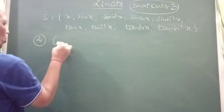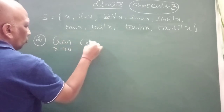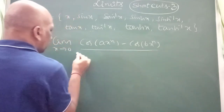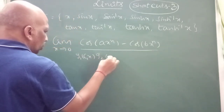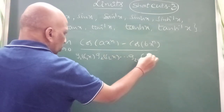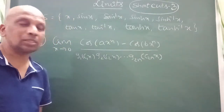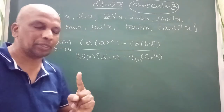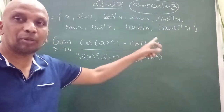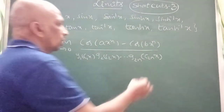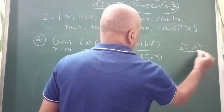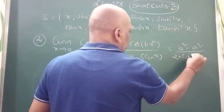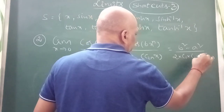See the next shortcut. Limit x tends to 0 of cos(Ax^n) minus cos(Bx^n) divided by g1(c1·x) times g2(c2·x) and so on up to g(2n)(c(2n)·x). When the power is n, the denominator should have 2n factors — for example if n is 3, you need 6 factors; if x squared, you need 4 factors. The answer is b squared minus a squared divided by 2 times c1 times c2 and so on up to c(2n).